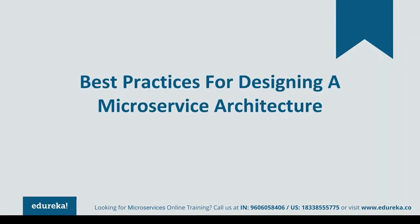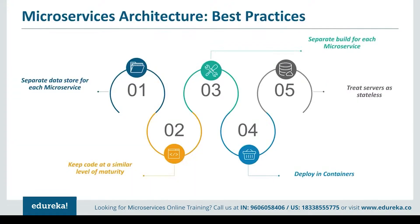Now that you've seen the real life use case of Uber, let's look at best practices to design microservices. Initially, separate the data store for each microservice. Then, keep the code at a similar level of maturity. After this, separately build each microservice according to its respective features and then deploy into containers. Lastly, create the servers as stateless for communication.